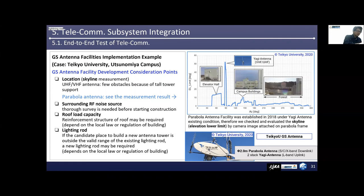Regarding lightning protection: because lightning strikes are one of the critical risks for the antenna, it is important to protect it with lightning rods. If the candidate place for a new antenna tower is not within valid range of an existing lightning rod, a new lightning rod may be required. This also depends on local law or regulation of the building.